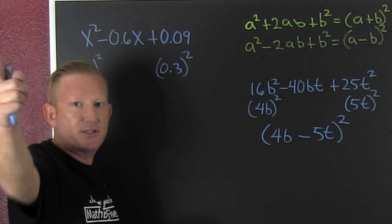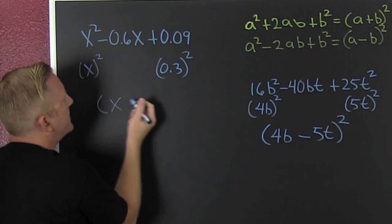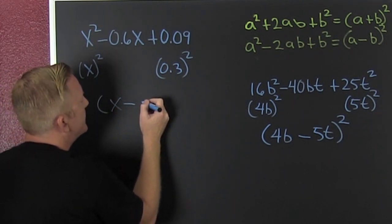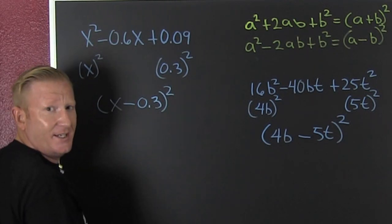Incognito perfect square. So then I see that's a minus right there. So then, that's an x, wait for it, minus 0.3, squared. And you're done.